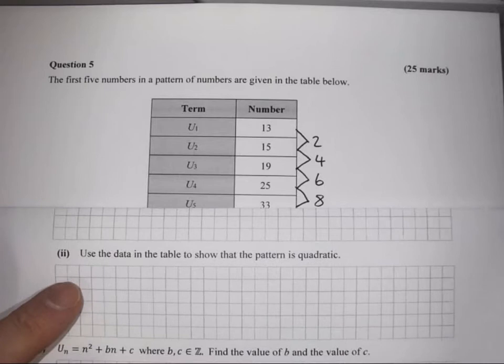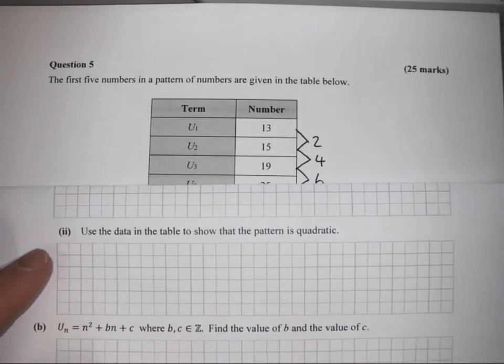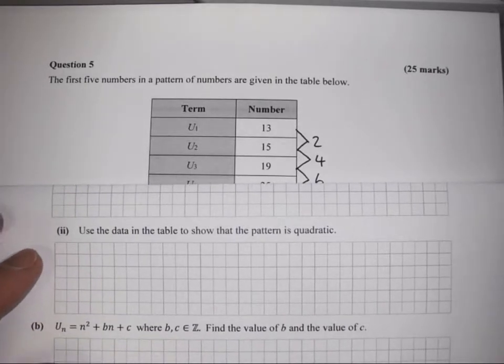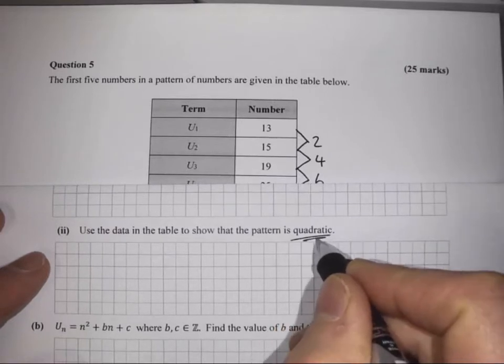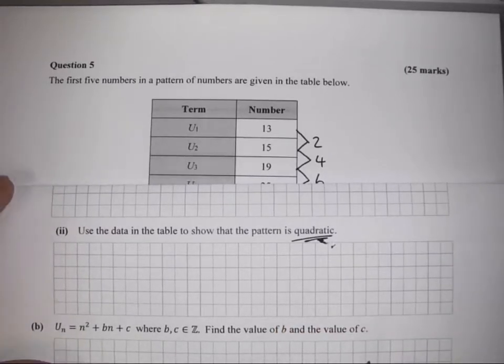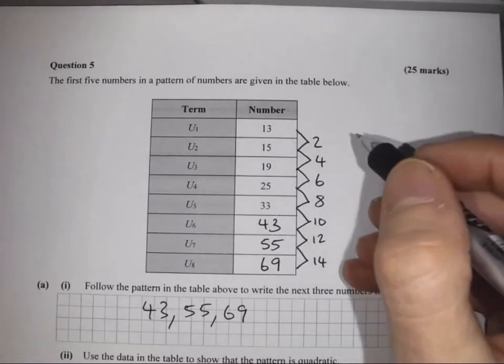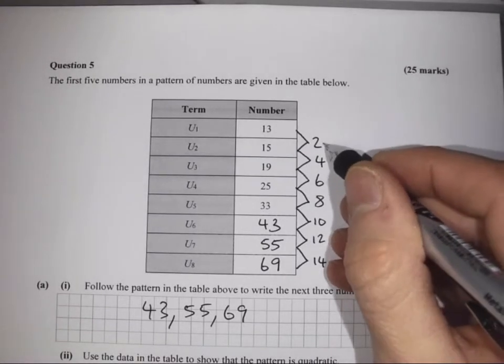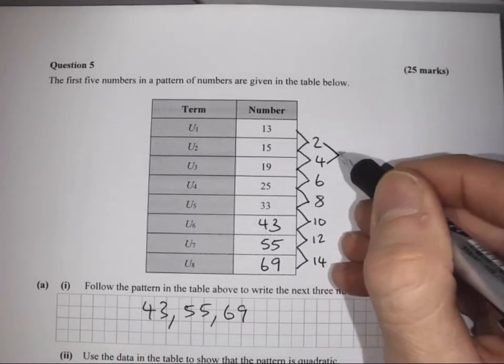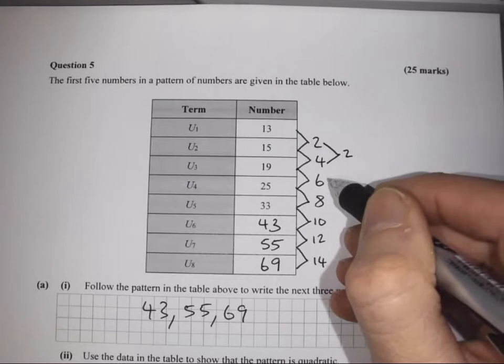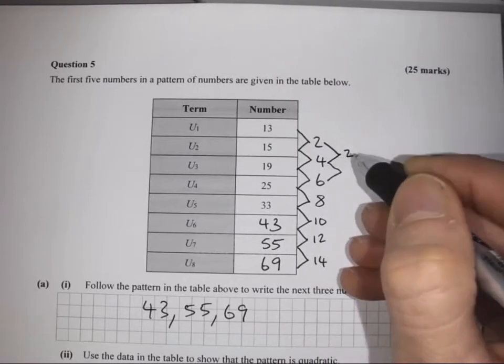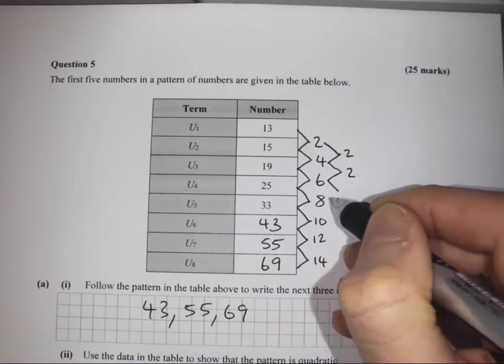Moving on, we're asked to use the data in the table to show that the pattern is quadratic. To show that something is quadratic, we're looking for something called a second difference. Here we go with the same technique again.